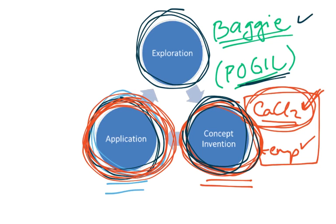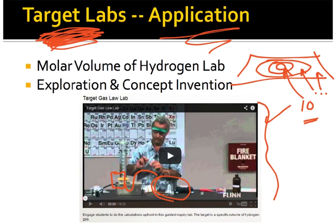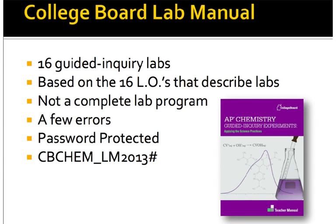These target labs would actually be a good way to do an application. Based on the stuff that we learned about, can you predict where something is going to happen? I thought that was a good idea. There are 16 different learning objectives in the framework that actually describe labs. So that's what they did. They went and took those 16 and put them together into a lab book. These are the 16 guided inquiry labs.